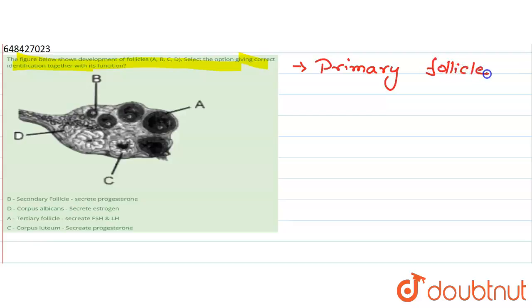Next one is given D is the corpus albicans. So D is corpus albicans, true, and its option says it secretes estrogen. So it is wrong because it does not only secrete estrogen, but it also secretes estrogen and progesterone.